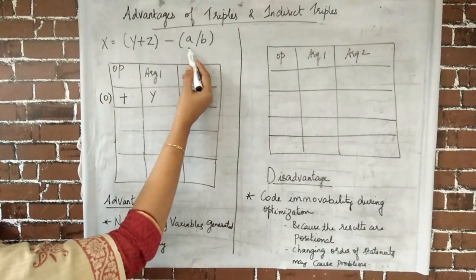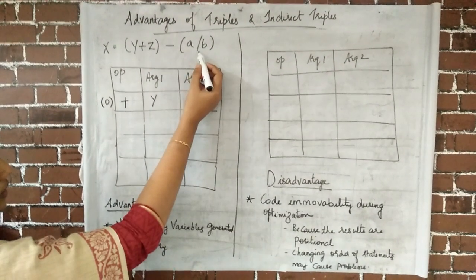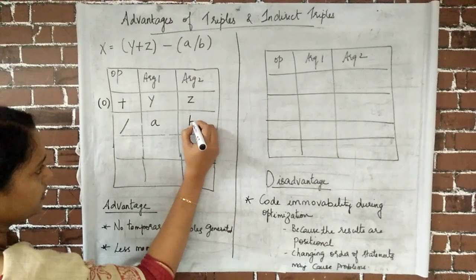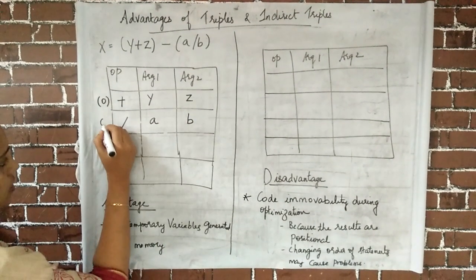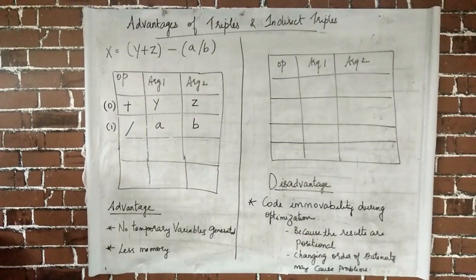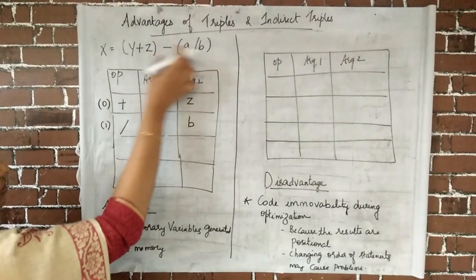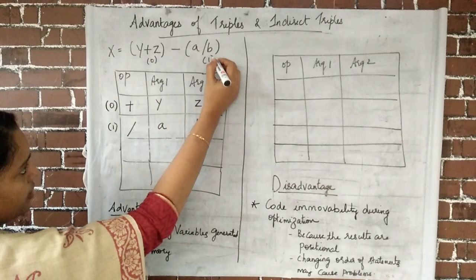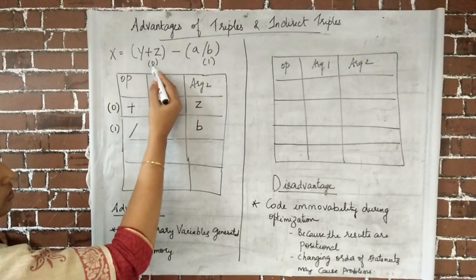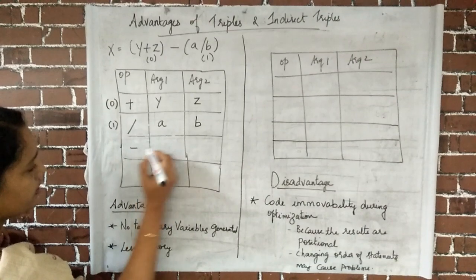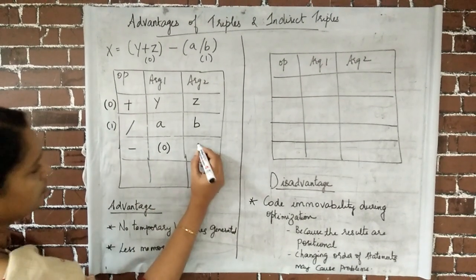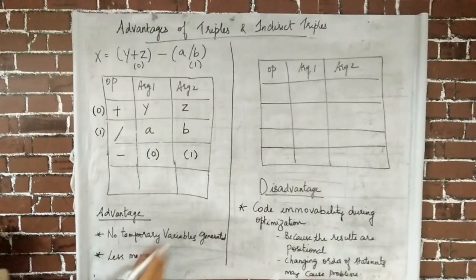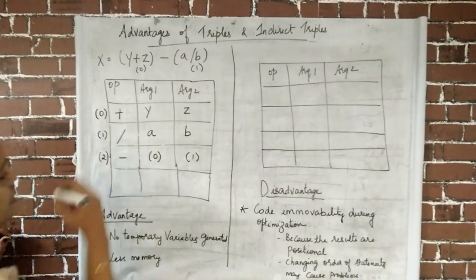Next we have a / b within brackets, so we write the three-address code for that. The operator is division, argument 1 is a, and argument 2 is b. The result of a / b will be stored at position 1. Then we perform the subtraction: the result of y + z is available at position 0 and the result of a / b is at position 1, so we compute 0 minus 1. The operator is minus, operand 1 is address 0, and operand 2 is address 1. The result is stored at position 2.